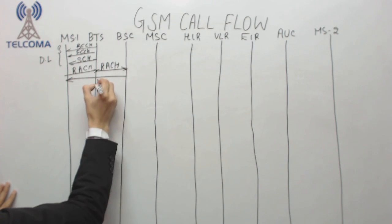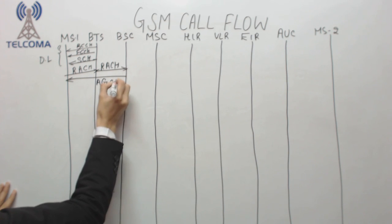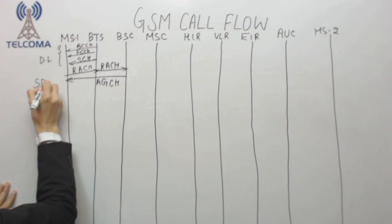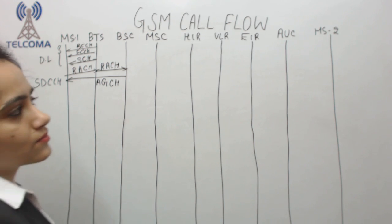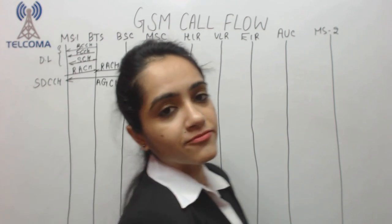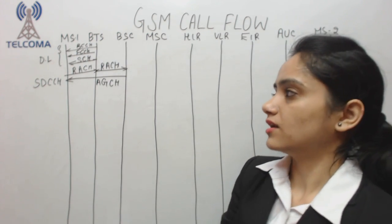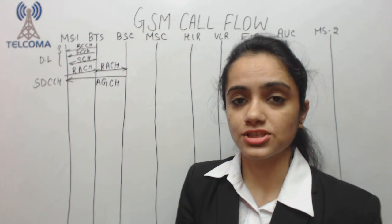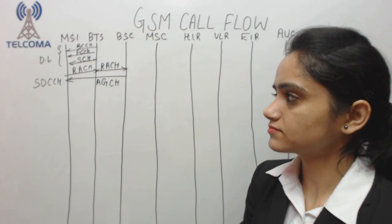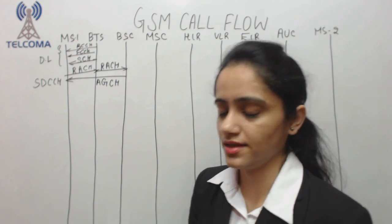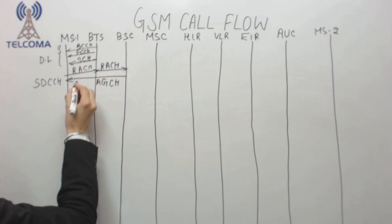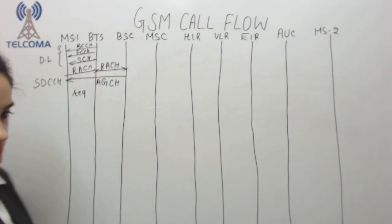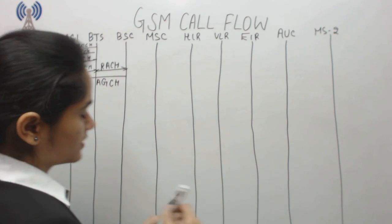In response, the network provides an Access Grant Channel, which means the mobile station is now assigned a dedicated channel called SDCCH. We are now performing signaling. The SDCCH is the main channel for the signaling process and it carries each and every information needed during setup.